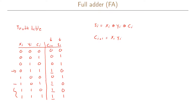...we see that ci+1 is 1 when ci equals 1 and xi XOR yi equals 1. So the full expression is ci+1 = xi·yi + (xi XOR yi)·ci. This is how we express the full adder outputs.